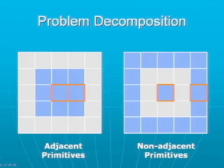We decompose the problem into checking for possible interference among adjacent primitives, as shown on the left, and non-adjacent primitives in the mesh, as shown on the right.